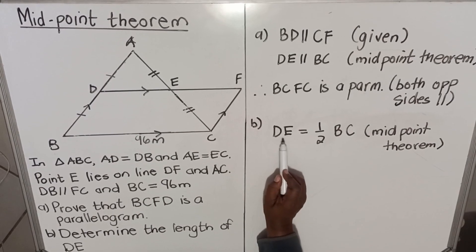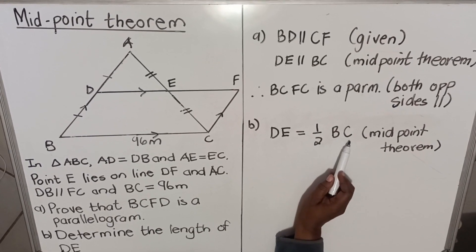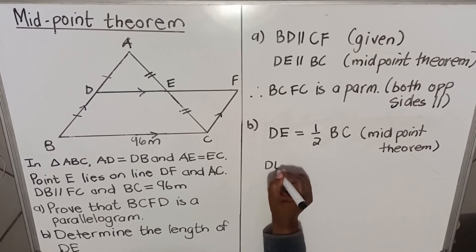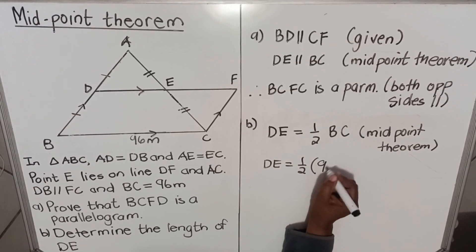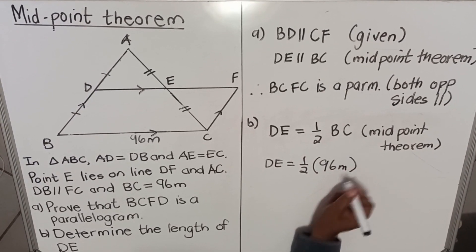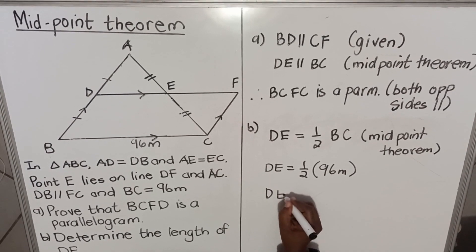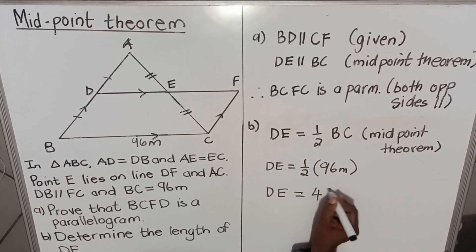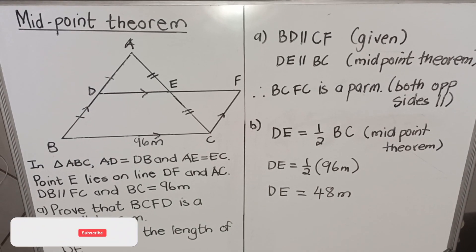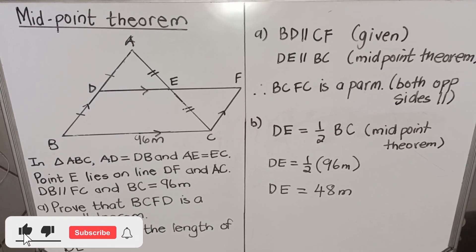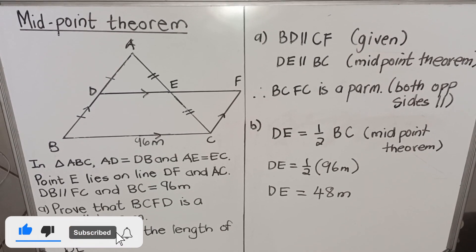Okay, this line, this one, is twice that one. So if I want this one, I must do half of it. So DE is equal to half BC. Now DE is equal to half, what is my BC? My BC is 96 meters. So it means my DE is equal to 48 meters.